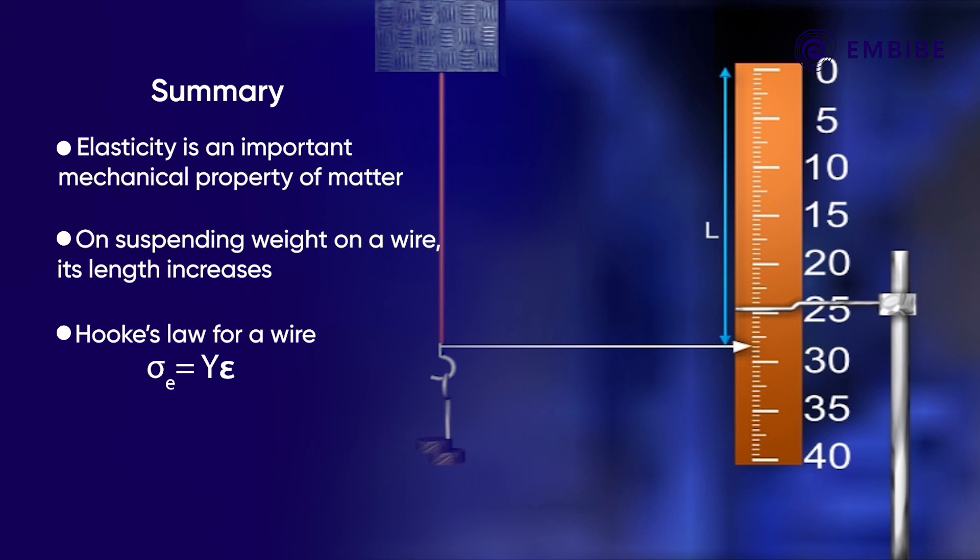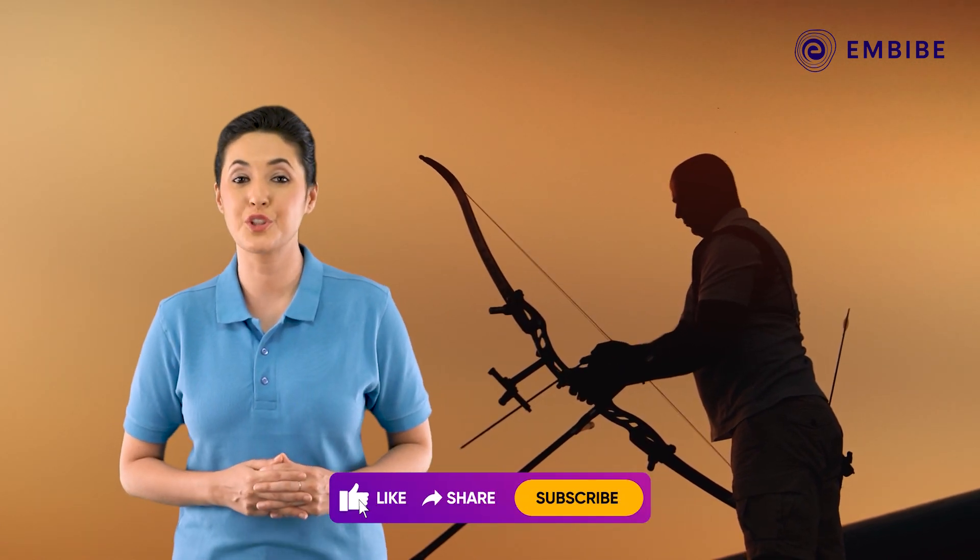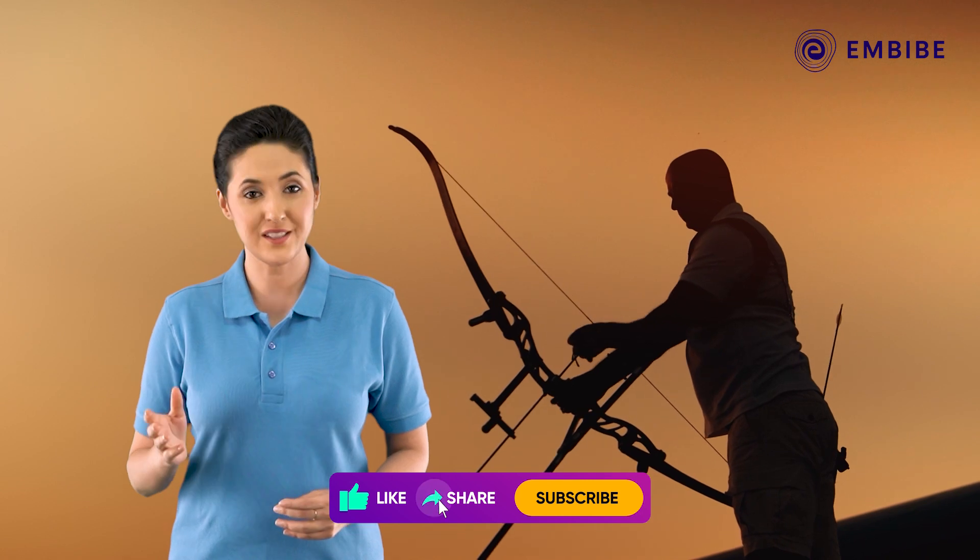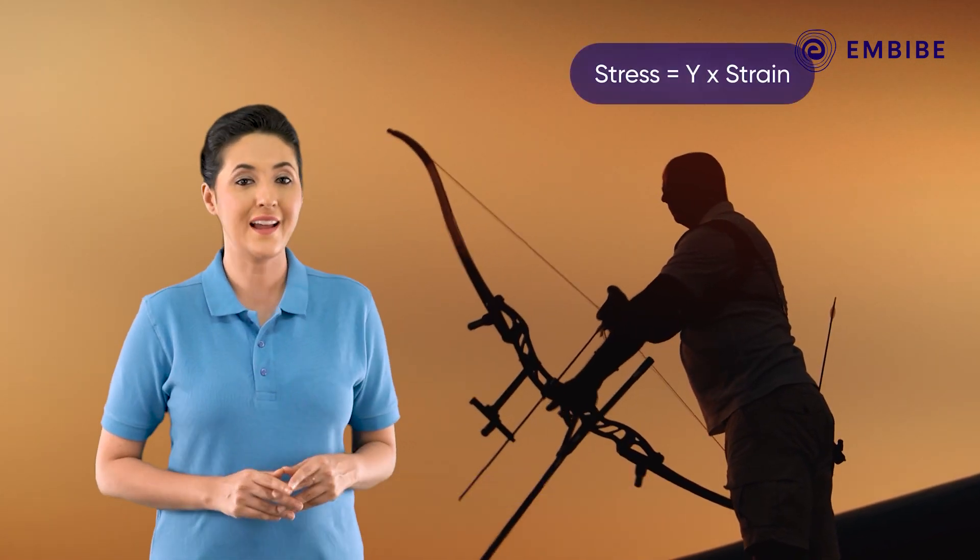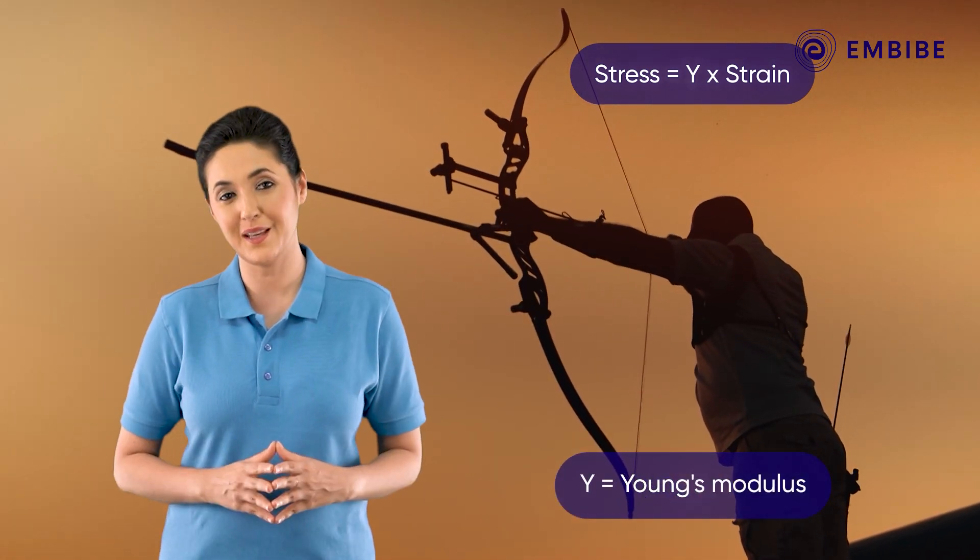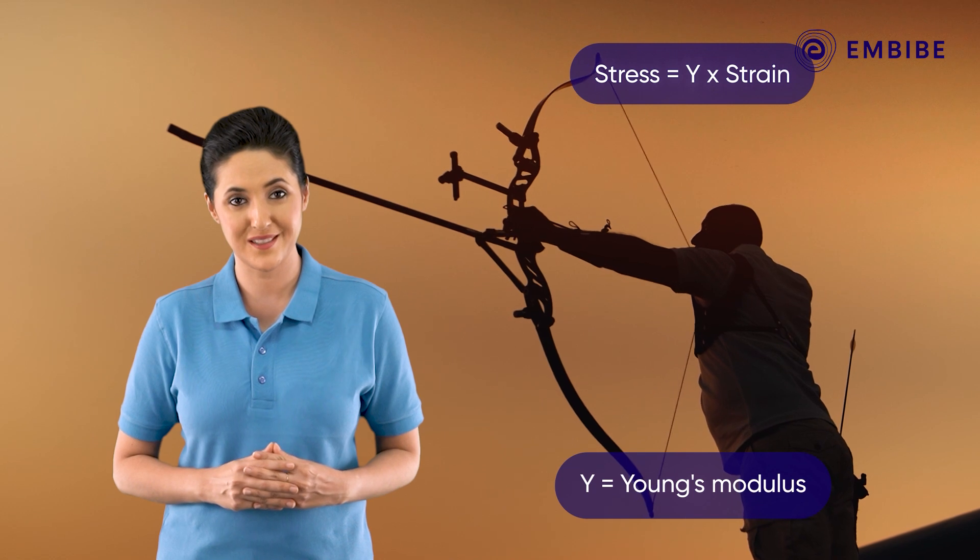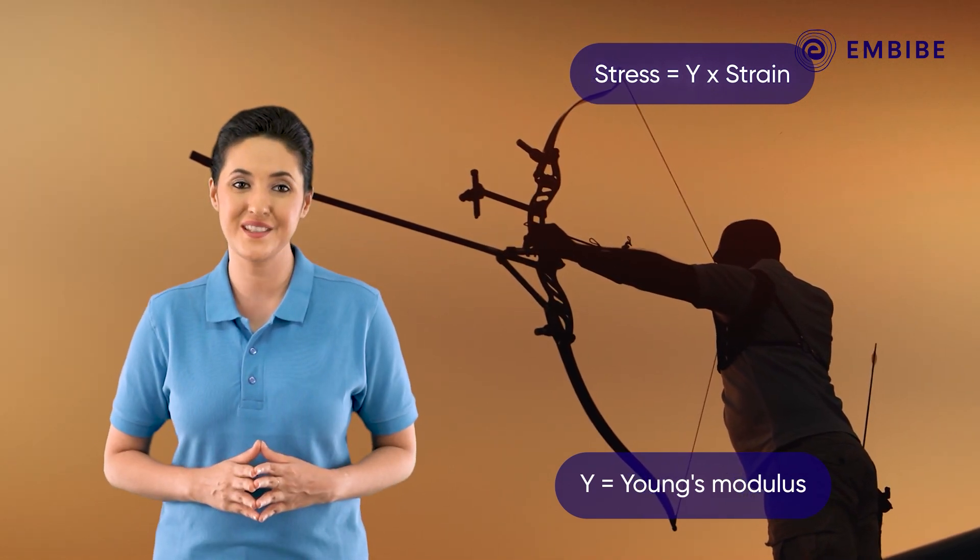We found that the constant of proportionality Y is known as Young's modulus of the given wire. We have learned that Young's modulus is the constant of proportionality between the linear stress and the linear strain of a material, and this Young's modulus is one of the three types of elastic modulus. Stay tuned to explore the other types of elastic modulus as well.